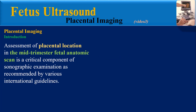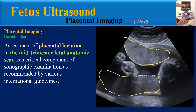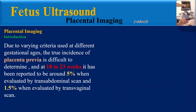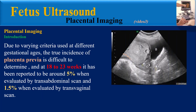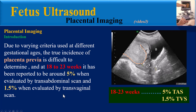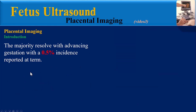Assessment of placental location in the mid-trimester fetal anatomy scan is a critical component of sonographic examination, as recommended by various international guidelines. Due to varying criteria used at different gestational ages, the true incidence of placenta previa is difficult to determine. At 18 to 23 weeks, it has been reported to be around 5% by transabdominal ultrasound and 1.5% when evaluated by transvaginal scan.